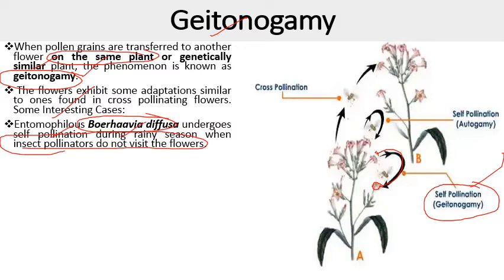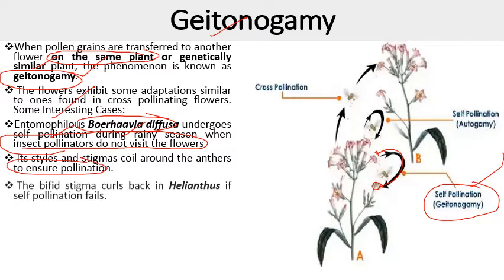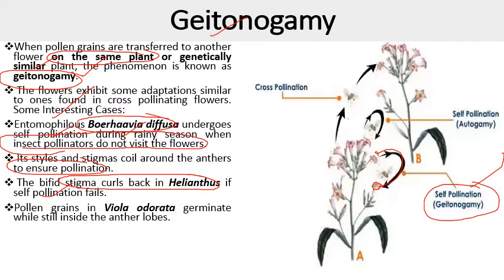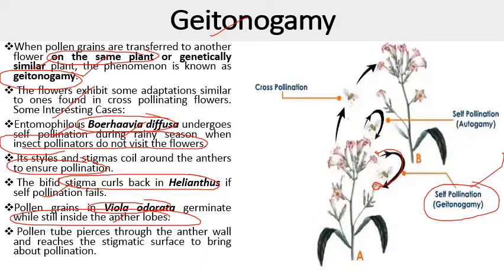Boerhavia diffusa shows self-pollination in the rainy season because no insect pollinators are available. Its style and stigma coil around the anther to ensure self-pollination. The bifid stigma curls back in Helianthus if cross-pollination fails. In Viola odorata, pollen grains germinate while still inside the anther lobe, and the pollen tube pierces through the anther wall and reaches the stigmatic surface to bring about self-pollination.